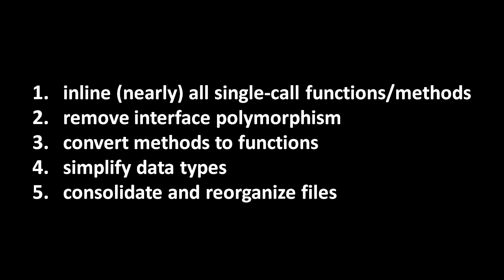Here's the actual process I undertook to arrive at my revised version. I did it in basically this order: first I inlined nearly all of the single-call functions and methods; I then removed the interface polymorphism; I converted all the methods to functions — basically just taking what was the receiver and making it the first argument; I then simplified the data types; and lastly I consolidated and reorganized the files, because once I inlined all that code a whole bunch of files had nothing in them.